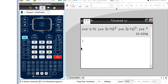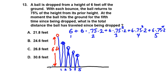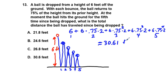We get thirty point six zero nine, or approximately thirty point sixty-one feet. Looking at the answer choices, that gives us answer D.